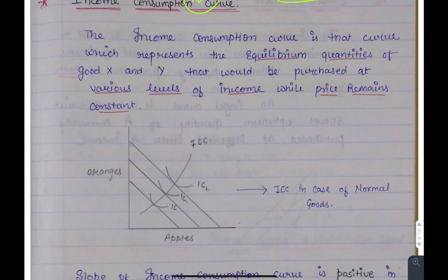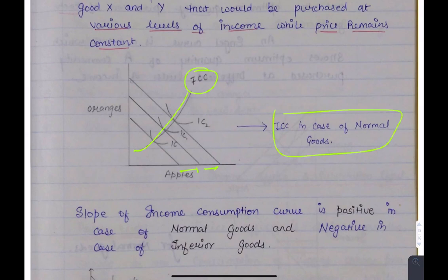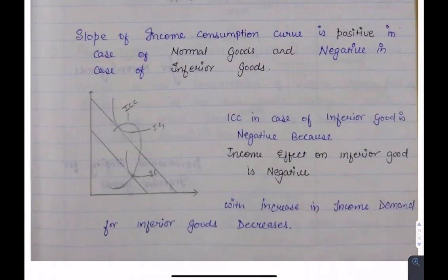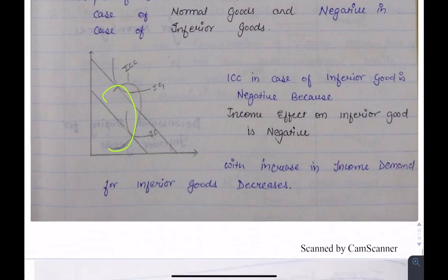After that, we come to the income consumption curve. In the ICC, we change income while all prices remain the same. As income increases, the budget line is shifting, and we derive the ICC curve from different equilibrium points. For normal goods, the ICC is upward sloping. For inferior goods, it will be backward bending — because when income increases, the consumption of inferior goods will reduce.